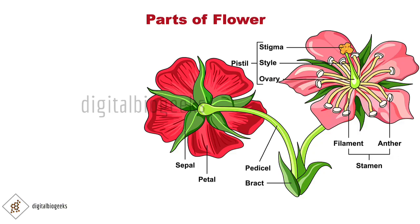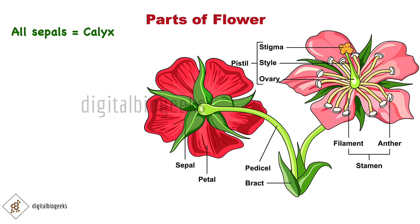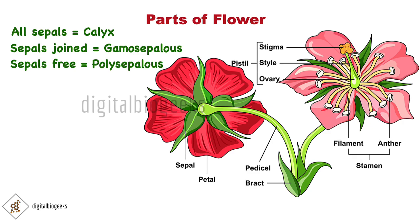A flower consists of four main parts, also known as floral whorls. The calyx is the outermost whorl — a bud is protected with green leaf-like structures called sepals, and all the sepals together are known as calyx. When sepals are joined together it is called gamosepalous, and when they are free it is called polysepalous. The number of sepals can vary from three to five, and the edge can be smooth, toothed, or lobed.